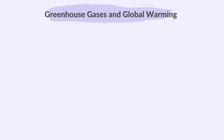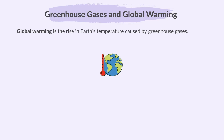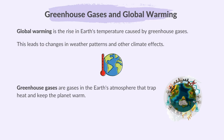Moving on, we'll discuss greenhouse gases and global warming. Global warming is the rise in Earth's temperature caused by greenhouse gases. This leads to changes in weather patterns and other climate effects. Greenhouse gases are gases in the Earth's atmosphere that trap heat and keep the planet warm. Carbon dioxide and methane are examples of greenhouse gases.